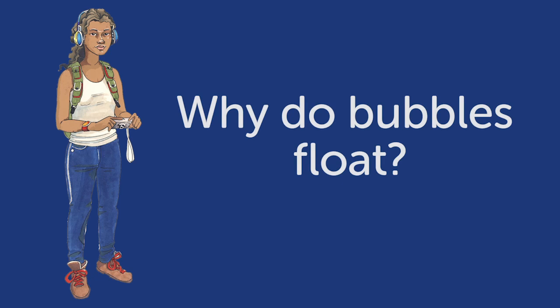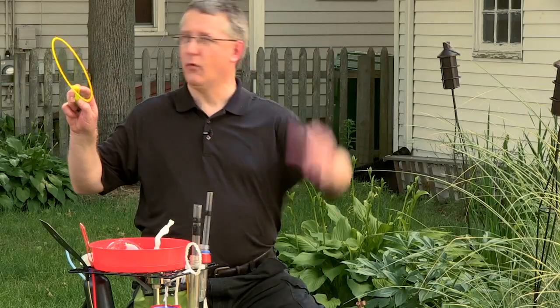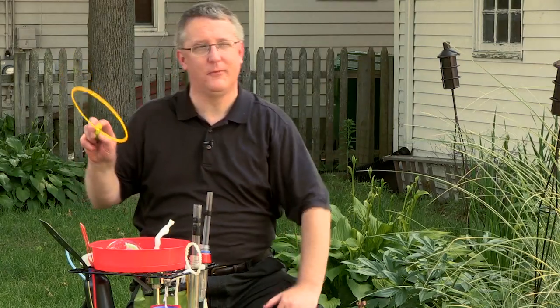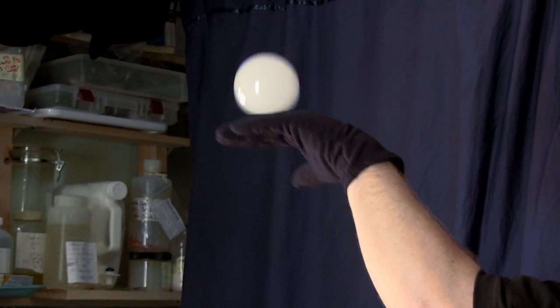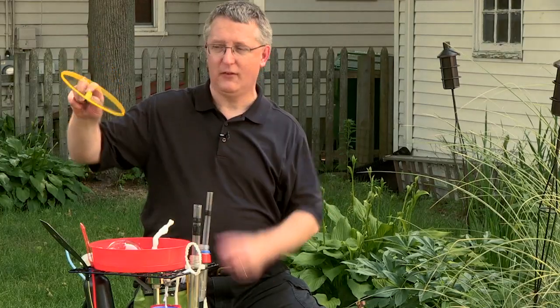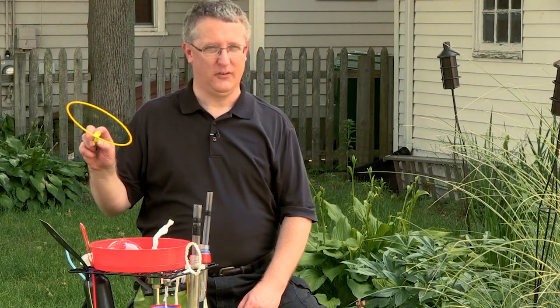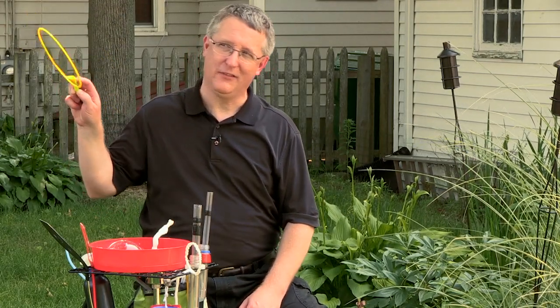Why do bubbles float? A bubble really only contains as much liquid as perhaps a raindrop, and raindrops will sink right away — they don't float. A bubble will float because it's packed with gas. It has more surface area, it's resistant to falling, and the breezes will carry it along. It's kind of frustrating that air is invisible sometimes, but air makes a lot of things happen.